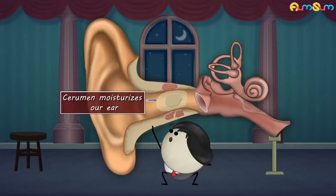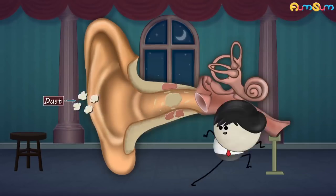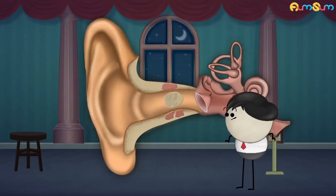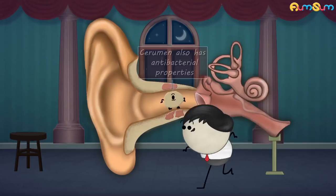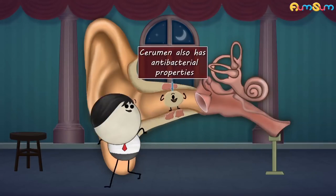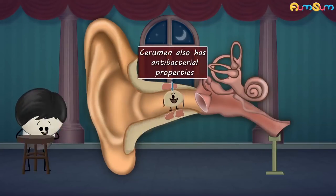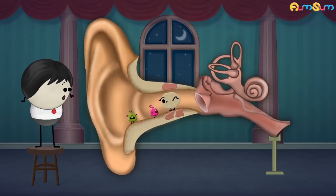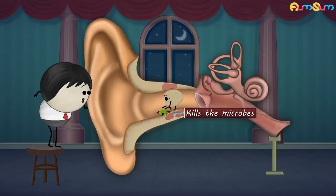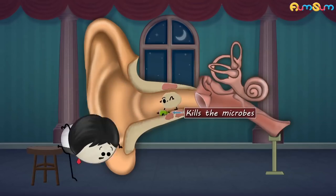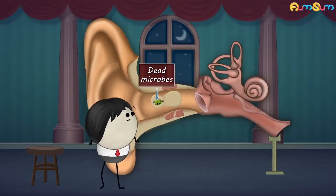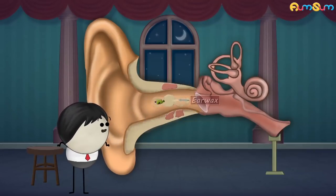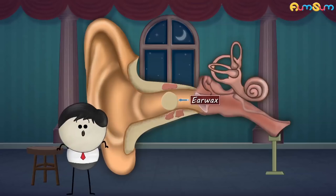Cerumen moisturizes our ears and traps dust and dead skin cells, keeping our ears clean. Besides this, cerumen also has antibacterial properties. When harmful microbes try to enter deeper into our ears, the cerumen traps and kills them. These dead microbes, dust, oil, and dead skin cells together form the ear wax.